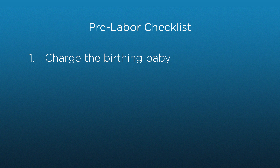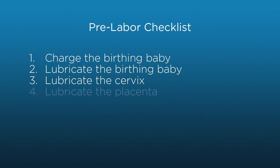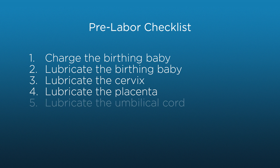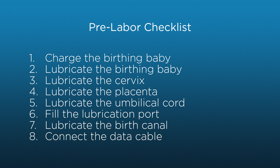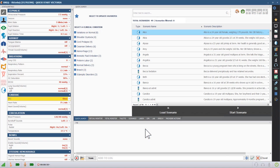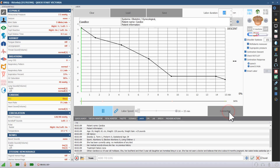Before starting, make sure you have properly settled Victoria and the birthing baby. Once Victoria is completely prepared for the birth, click the shoulder dystocia category in the quick launch page of the software. Select any of the scenarios with the baby icon and click start scenario to begin the labor.